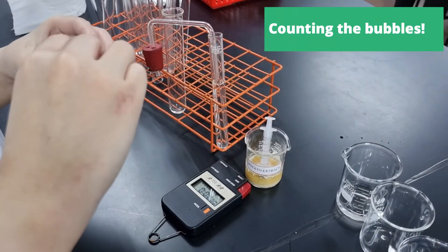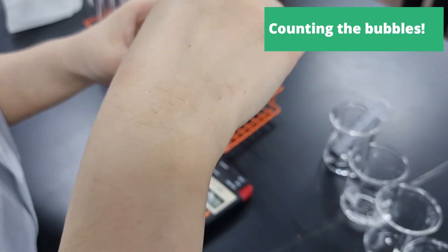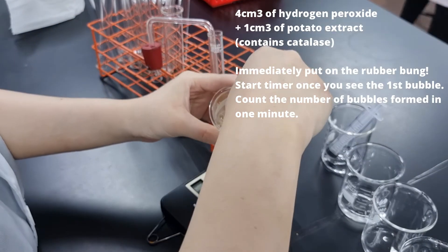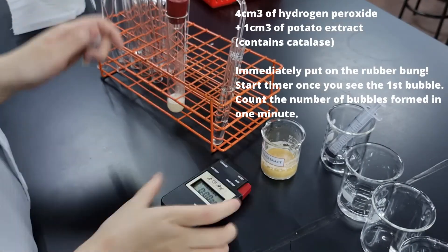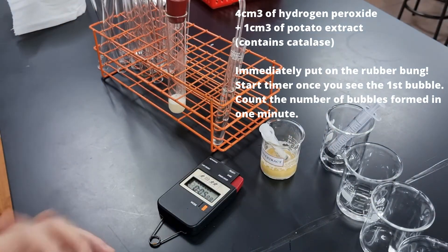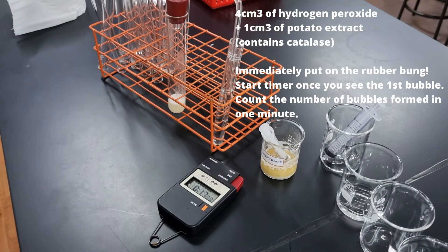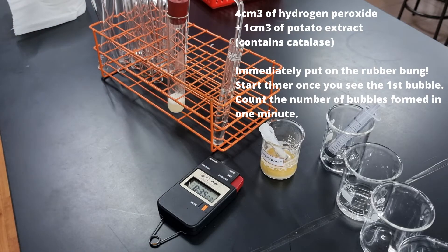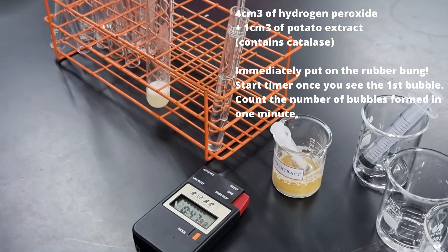After the concentrations are prepared, we add 4 cm cubed of the substrate, which is hydrogen peroxide, into a boiling tube, and then add 1 cm cubed of potato extract if contains catalase. And we put the bung on, and it's connected to a delivery tube. And as you can see, the delivery tube is then connected to a test tube with distilled water. And we count the number of bubbles produced in 1 minute.